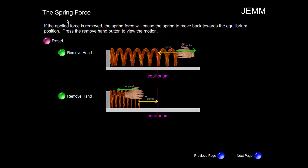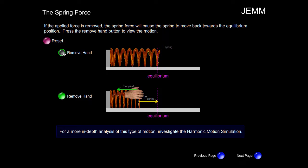And so let's see what happens when we remove the applied force. Notice, the spring returns to its equilibrium position. Similarly, when there's a compression involved, and we remove the applied force. Once again, the spring returns to its equilibrium position.